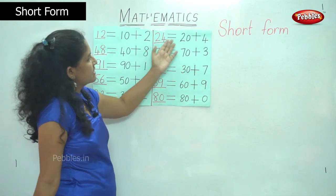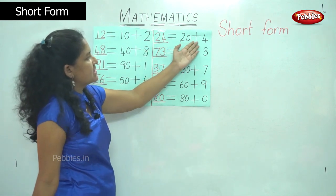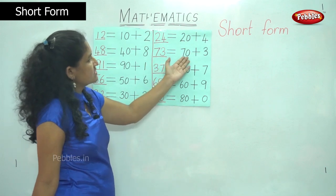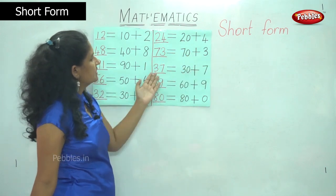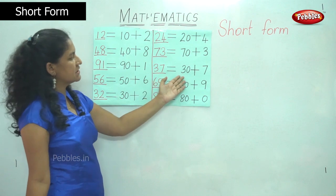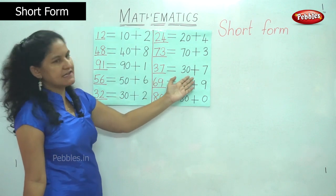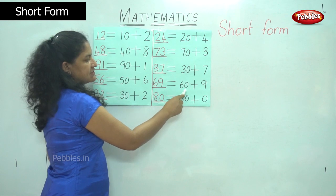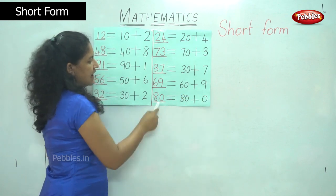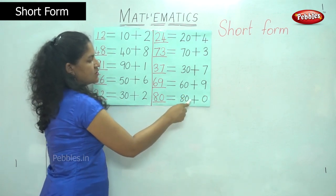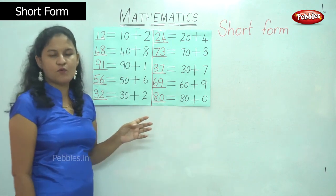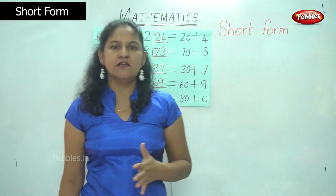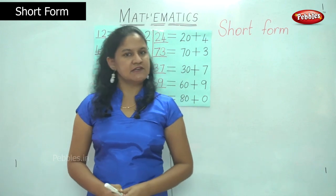24 is 2 tens or 20 plus 4 ones. 73 gives me 7 tens or 70 plus 3 ones. 37 gives me 3 tens or 30 plus 7 ones. 69 is 6 tens or 60 plus 9 ones. And 80 is 8 tens or 80 plus 0 ones. So this is our expanded and short form concept in maths.